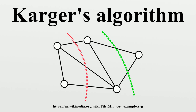Improvement bound: To determine a min cut, one has to touch every edge in the graph at least once, which requires linear time in a dense graph. The Karger-Stein min cut algorithm has a running time very close to that lower bound, making it nearly optimal.